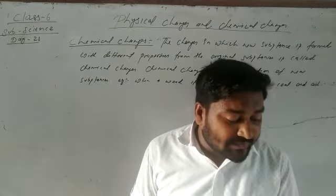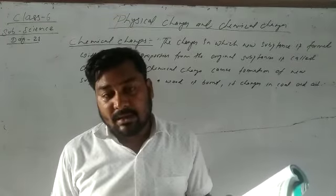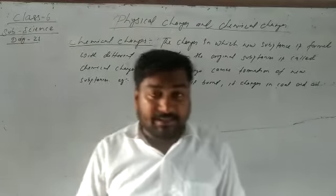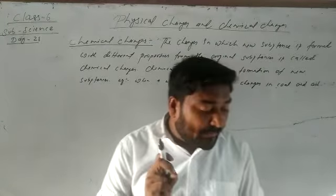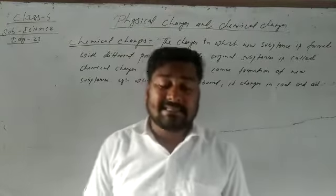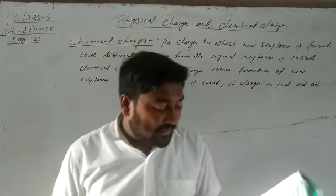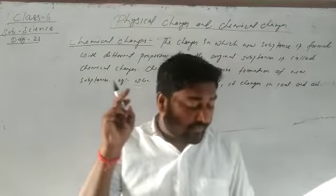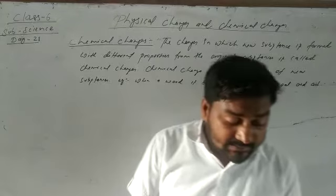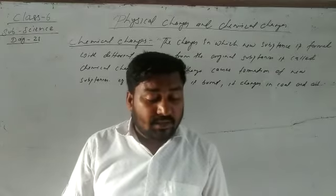Differences between physical and chemical changes: Physical change is a change of state of a substance, while chemical change is a change of matter itself. Physical change is temporary but chemical change is permanent. In physical change, only physical properties like shape, size, state, or mass change; in chemical change, chemical composition also changes. Physical change is reversible but chemical change is irreversible.